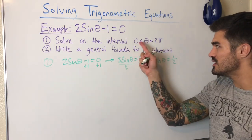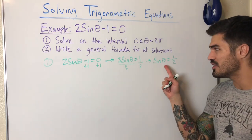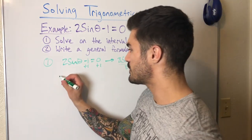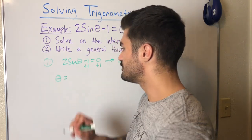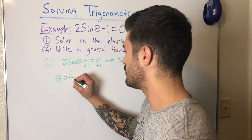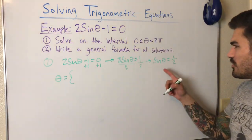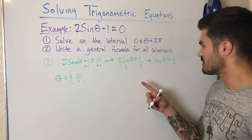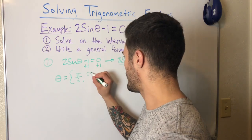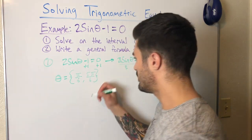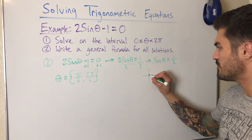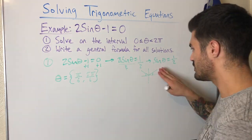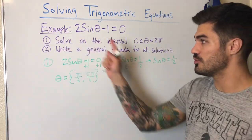Now I'm looking for values of theta between zero and two pi that make sine theta equal to one half. That's pi over six — one solution. Thinking about the unit circle, sine is positive in the first and second quadrant, and my reference angle is pi over six, so the two solutions are pi over six and five pi over six. These are the solutions from zero to two pi.